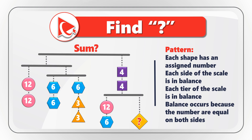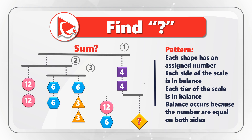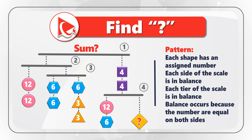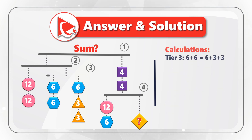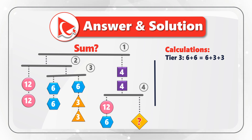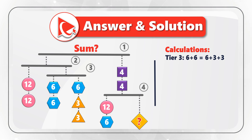We're presented with a multi-tier scale that has four tiers: Tier 1, Tier 2, Tier 3, and Tier 4. The scale remains in balance because the values on the left side and right side are equal, represented by the total of numbers inside each shape. Circle has number 12, hexagon has number 6, triangle has number 3, and square has number 4. Let's look closely at Tier 3 — each tier remains in balance because the numbers are equal on both sides.